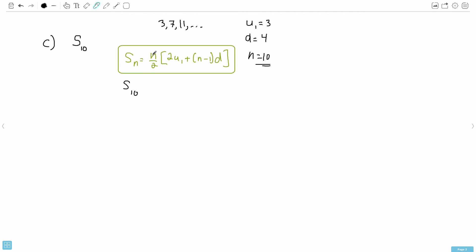Then it's just a matter of filling in all the stuff. So instead of n we put in a 10. So we go 10 over 2, open bracket here. We have 2 times U₁. U₁ is 3. Plus and again we put n minus 1 where n is 10. So it's 10 minus 1 times D, which is 4.